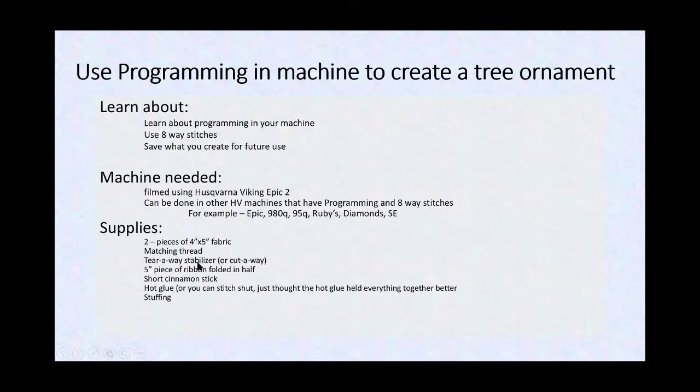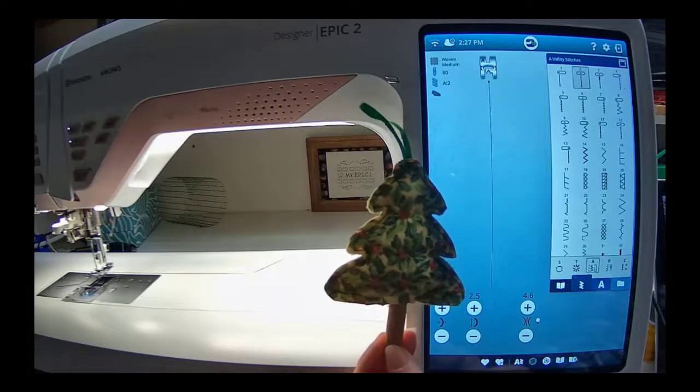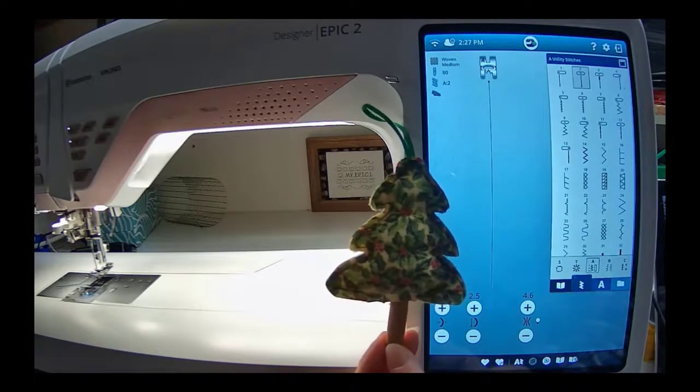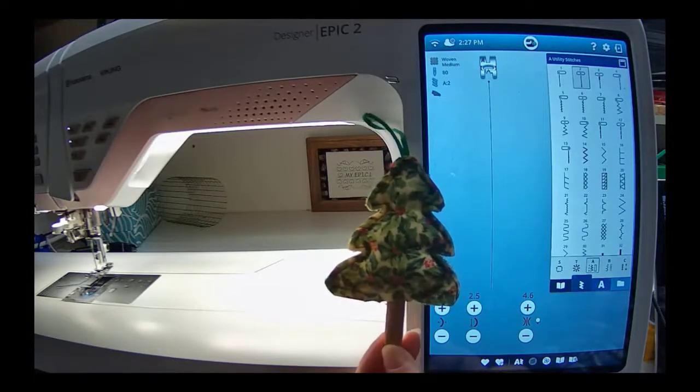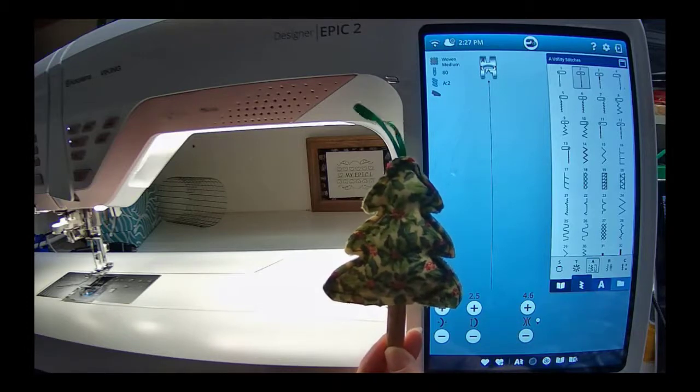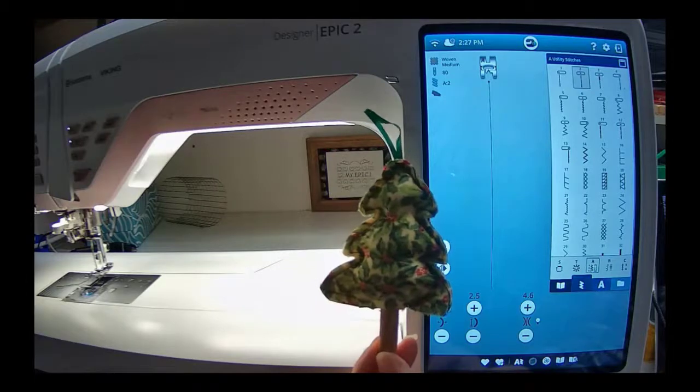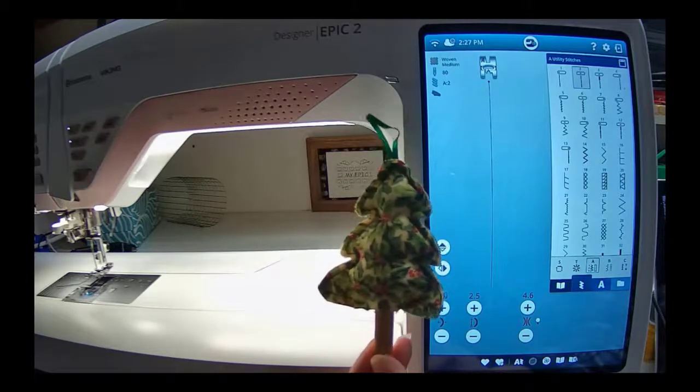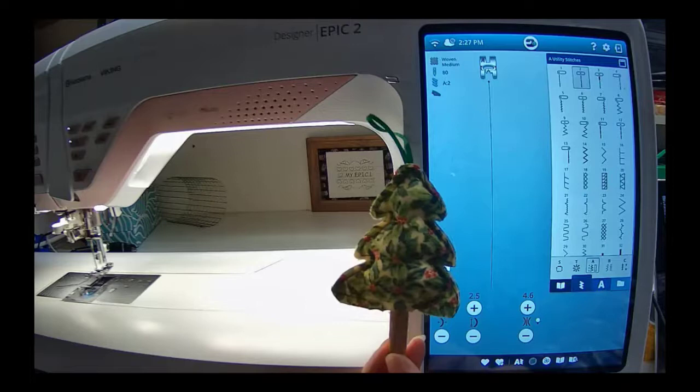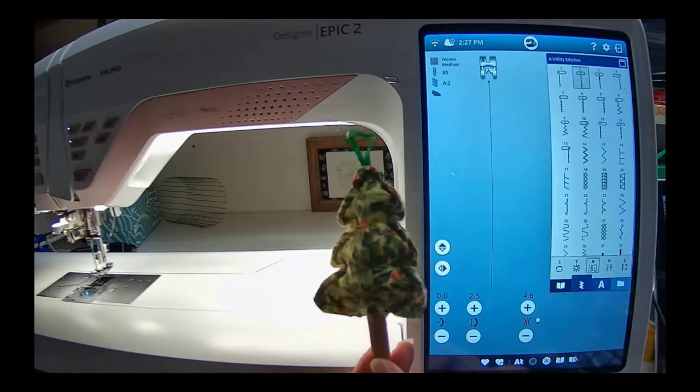We're going to have some stabilizer and some two pieces of fabric, and a couple of other little supplies. Let's create a little tree using programming in the sewing side of the machines. Now, this is going to be recorded using the Epic 2 sewing side, but it can also be done in the 980Q, because it's just sewing, and it's programming 8-way stitches.